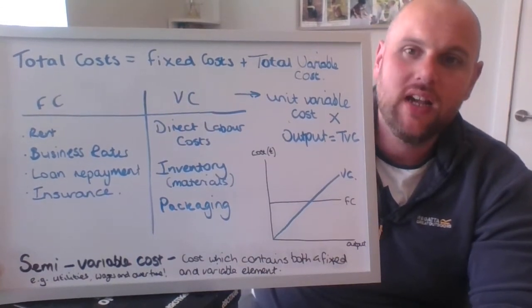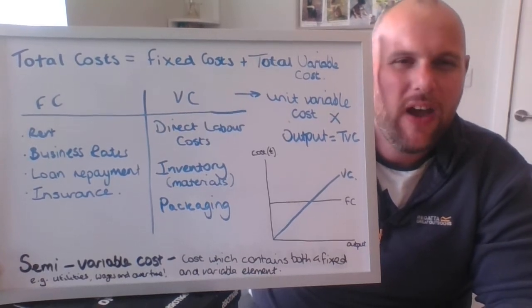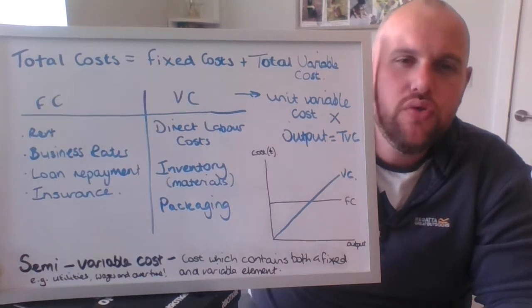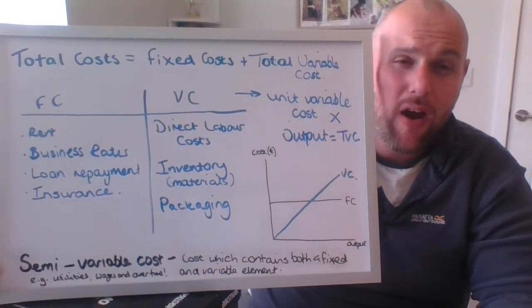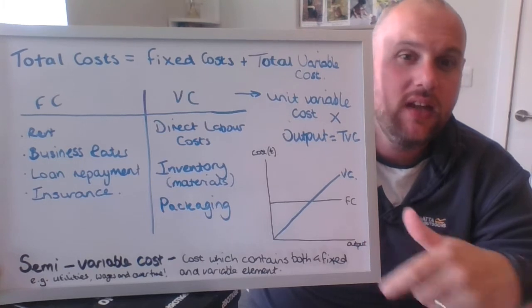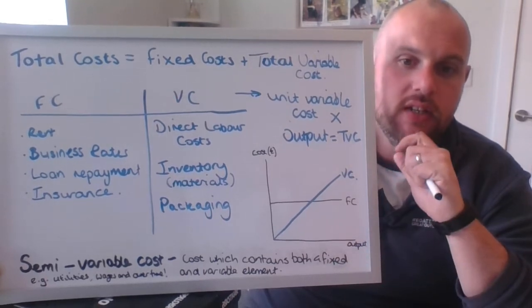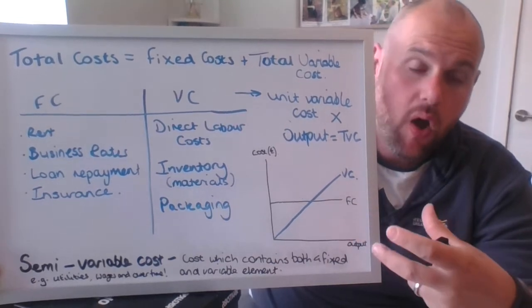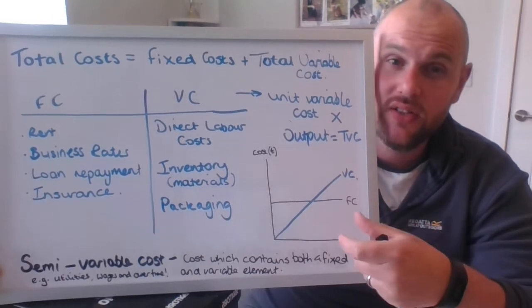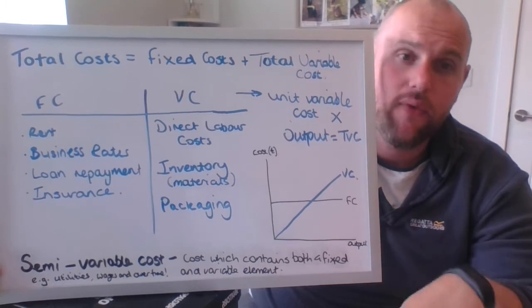When we want to calculate our total cost, we use the formula: fixed cost plus total variable cost. Variable cost can be calculated in two ways: either as the total variable cost or as the unit variable cost. The unit variable cost is the variable cost for one product — how much variable costs are in one of the products you're producing or selling. To work out the total variable cost, you take the unit variable cost and multiply it by the output. In exam questions, you'll often be given the unit variable cost and asked to calculate the total cost, or vice versa — you might have the total variable cost but need the unit variable cost for something like break-even, in which case you divide it.